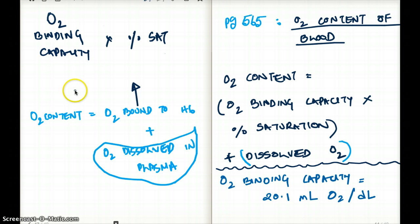Now oxygen binding capacity is really a fixed value. It's going to be 20.1 milliliter per deciliter, which I have written here. So that binding capacity is kind of fixed. All we have to do is multiply it with the percent saturation.